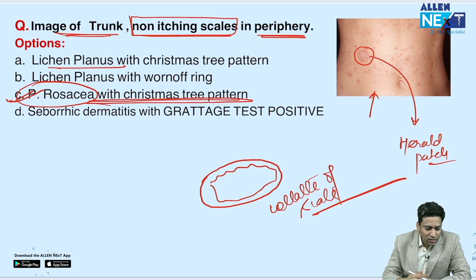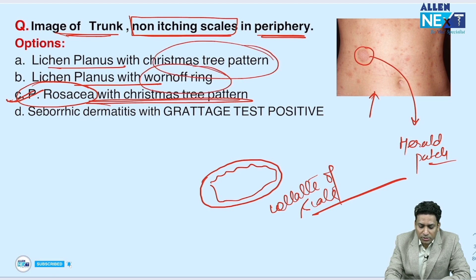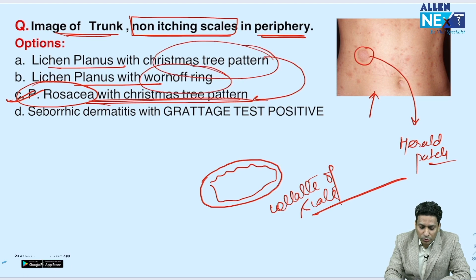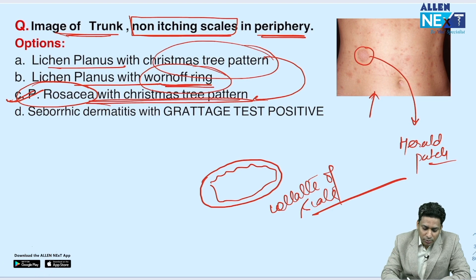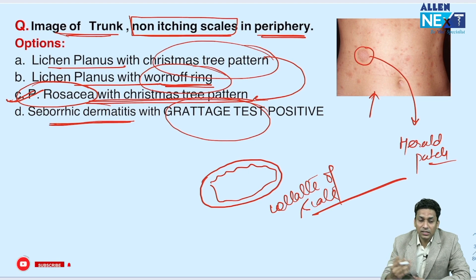This is obviously not lichen planus, where the five P's are seen. Lichen planus doesn't have collarette of scales or Christmas tree pattern. Christmas tree pattern is characteristic of Pityriasis rosea, while collarette of scales are also seen in Psoriasis via Grattage test. This is not seborrheic dermatitis either.